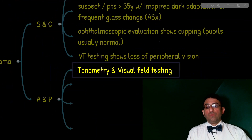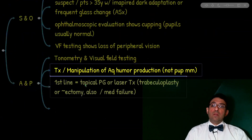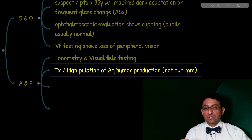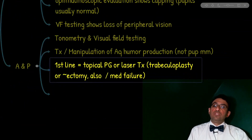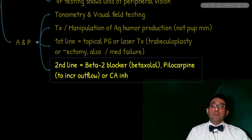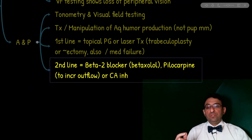The target of treatment for open-angle glaucoma is to manipulate the production of aqueous humor, not necessarily the pupillary muscles. First-line treatment is topical prostaglandins; an alternative is trabeculoplasty. If these fail, we consider trabeculectomy. Second-line options include beta-blockers such as betaxolol or carbonic anhydrase inhibitors such as acetazolamide. We may also benefit from pilocarpine to increase outflow.